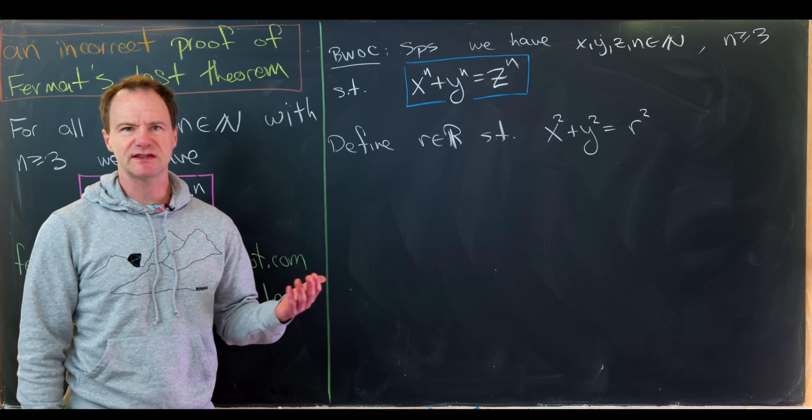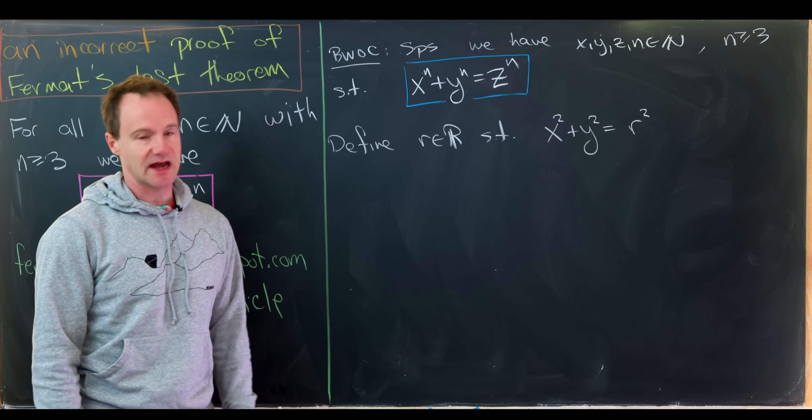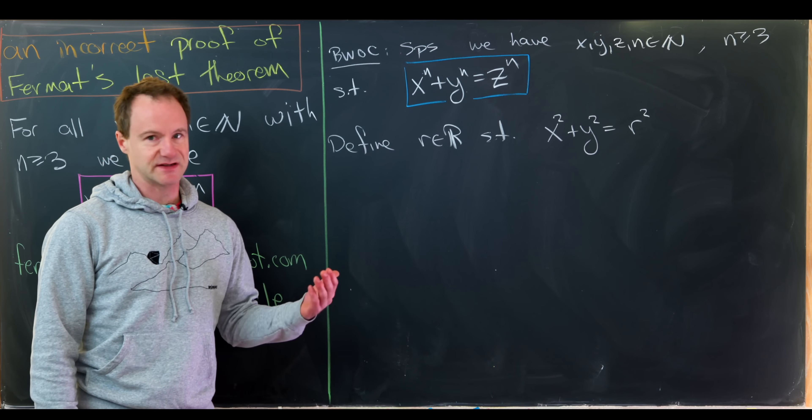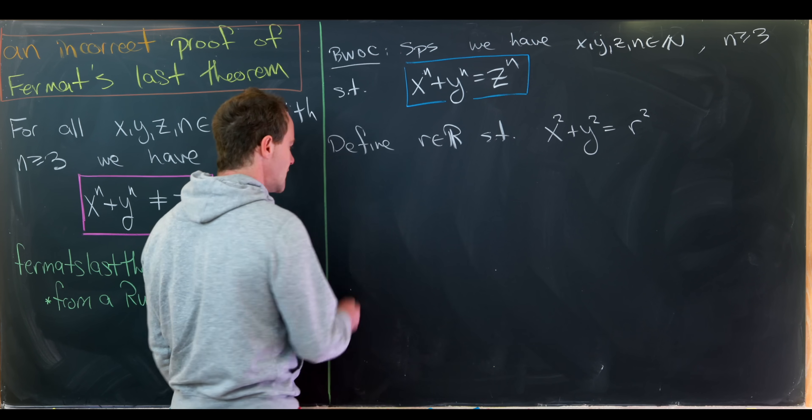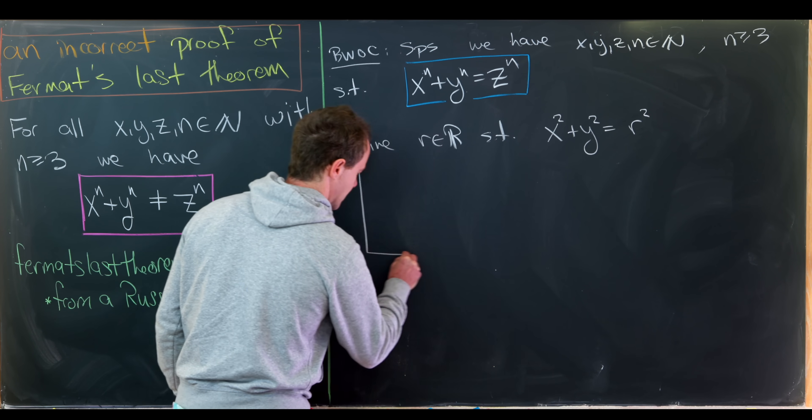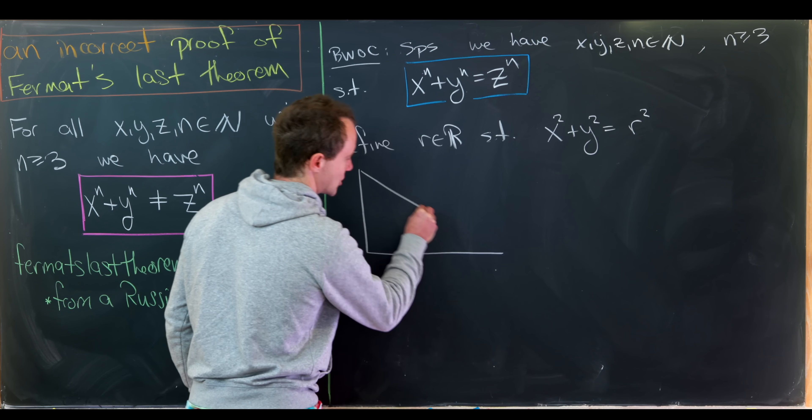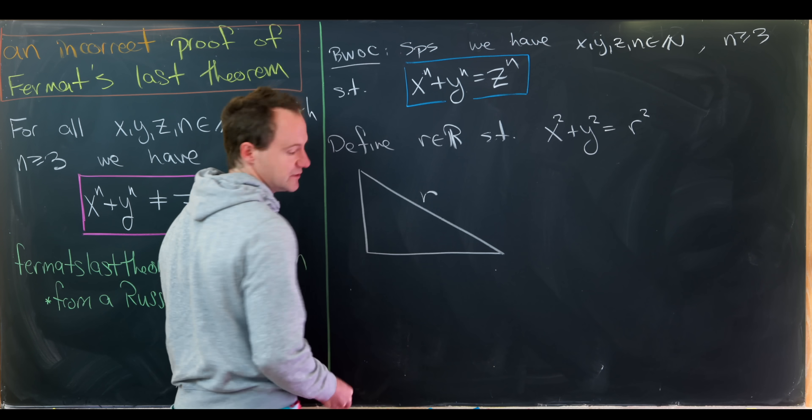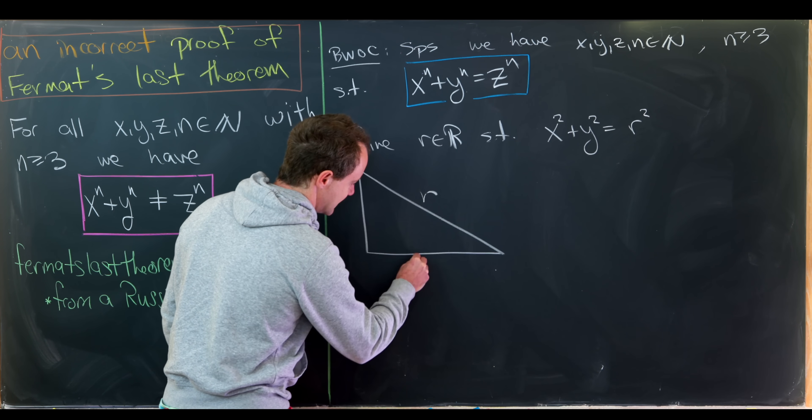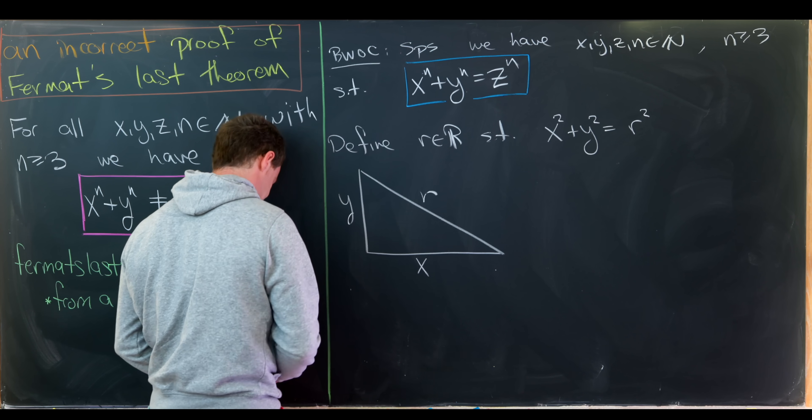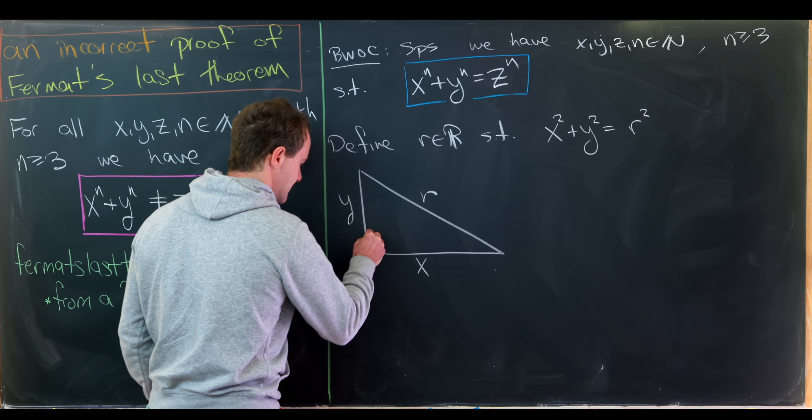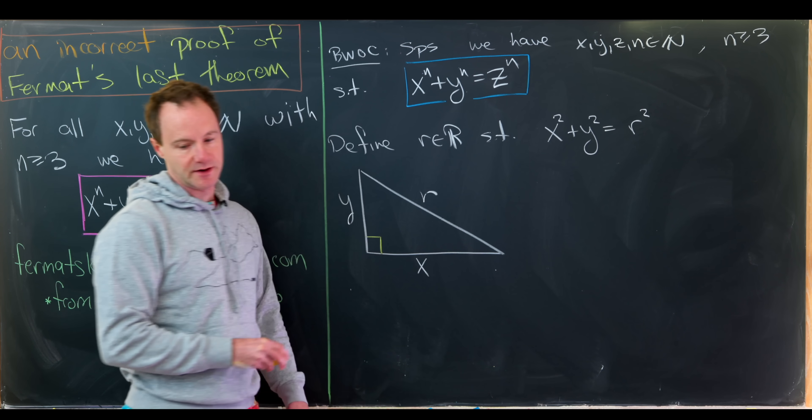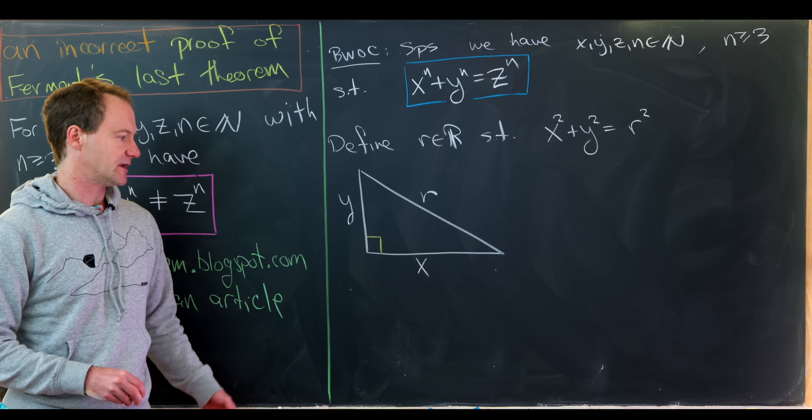So let's define r, a real number such that x squared plus y squared equals r squared. So it like completes a right triangle where x and y are the sides of the right triangle. So let's get a picture of that going on. So here we've got our right triangle. So our hypotenuse is r. Maybe we'll say this side is x and this side is y, and then this is our right angle over here.